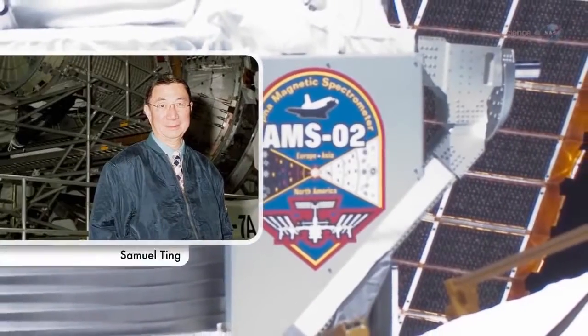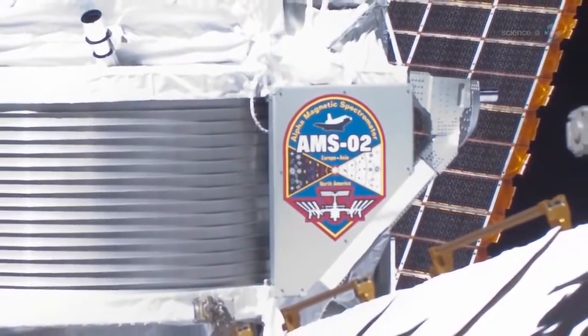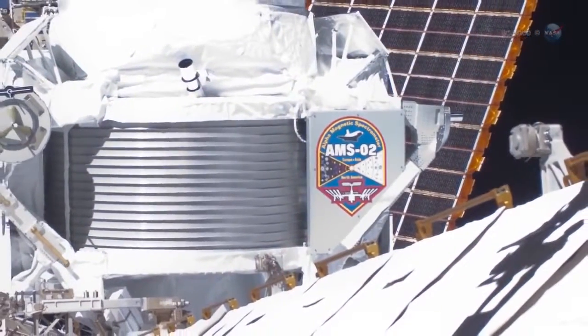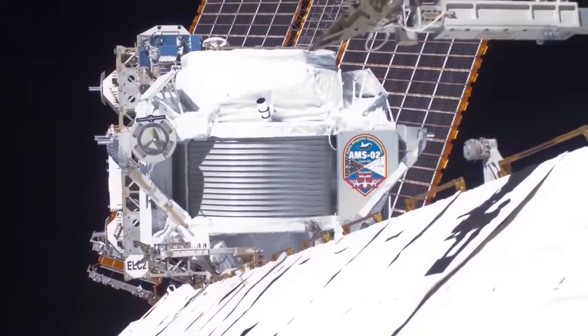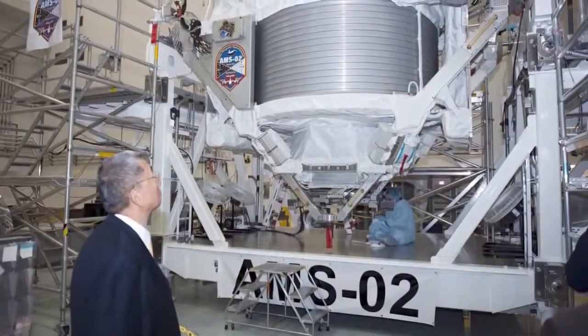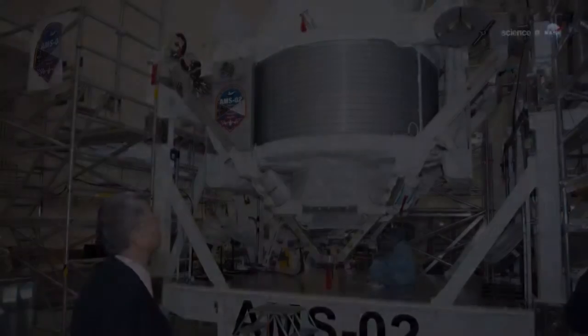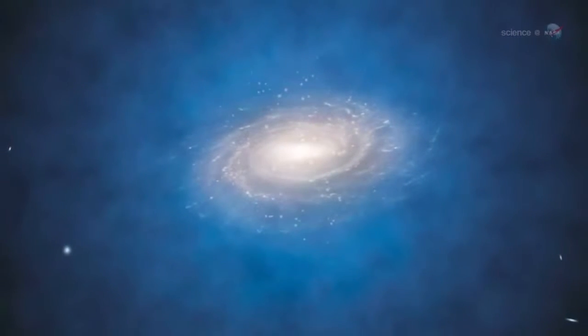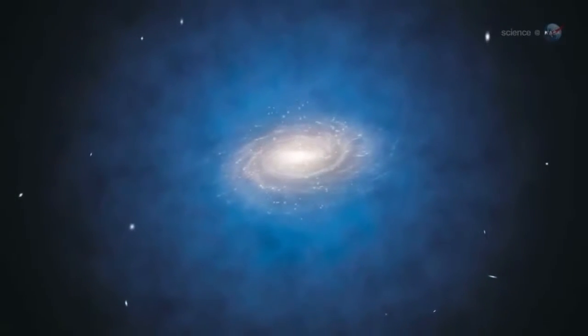On April 3, researchers led by Nobel laureate Samuel Ting of MIT announced that the Alpha Magnetic Spectrometer, a particle detector operating on board the International Space Station since 2011, has counted more than 400,000 positrons, the antimatter equivalent of electrons. There's no danger of an explosion, but the discovery is sending shockwaves through the scientific community. These data show the existence of a new physical phenomenon, wrote Ting and colleagues in an article published in Physical Review Letters. It could be a sign of dark matter.